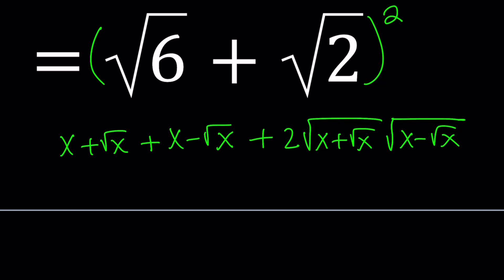Let's go ahead and simplify the left hand side and then we're going to set it equal to the right hand side squared. Root x cancels out. And then we get x plus x which is 2x.